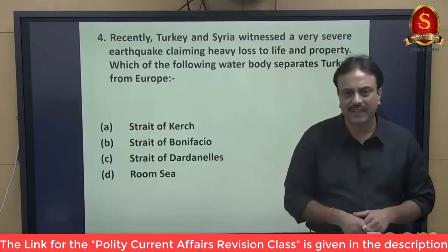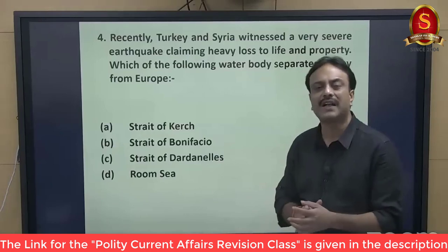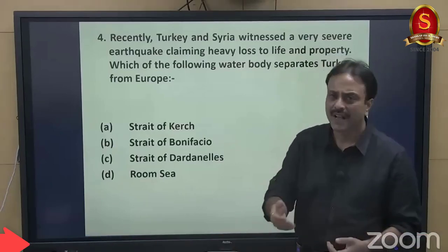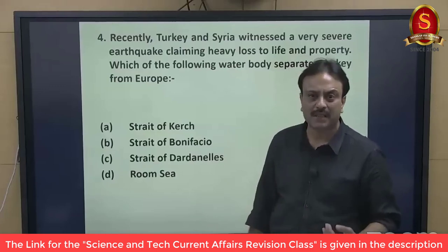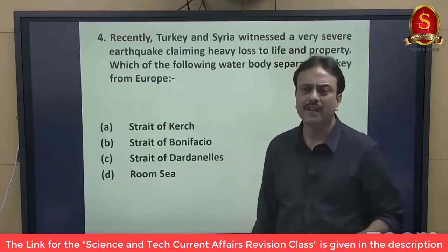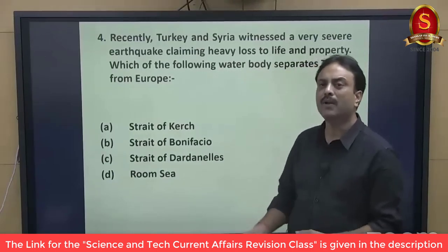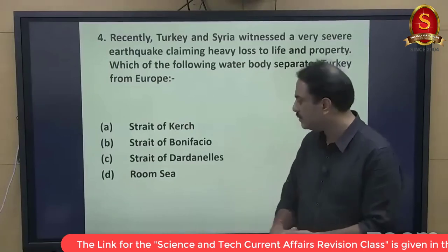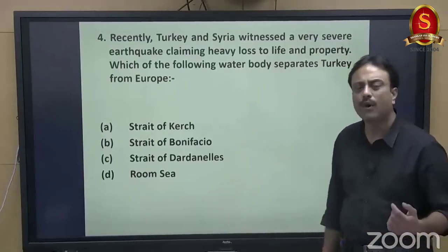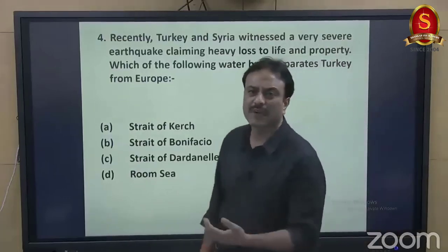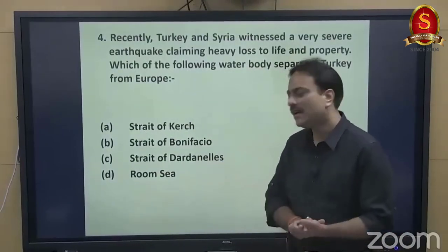Looking at the map: the Black Sea connects to the Sea of Azov via the Strait of Kerch. The city of Istanbul is separated from mainland Turkey by the Strait of Bosporus. The Sea of Marmara lies between Bosporus and Dardanelles. Black Sea → Strait of Bosporus → Sea of Marmara → Strait of Dardanelles → Mediterranean. The Strait of Dardanelles separates the European part of Turkey from the Asian part, making it the answer to this question.